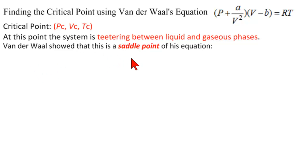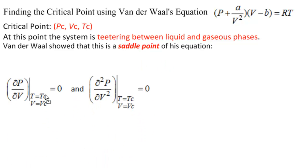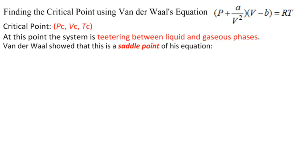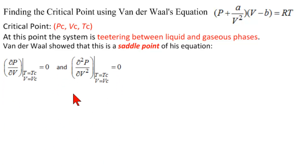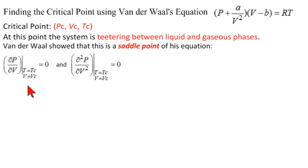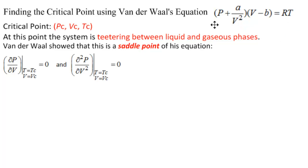Van der Waal showed that this is the saddle point of his equation, so that means it satisfies two equations. The first partial of pressure with respect to volume, evaluated at the point TC and VC, must be zero. And the second partial derivative of P with respect to V, evaluated at the same point, must also be zero. So let's work this out mathematically. The first thing we need to do is solve his equation for P and then take the partials with respect to V.